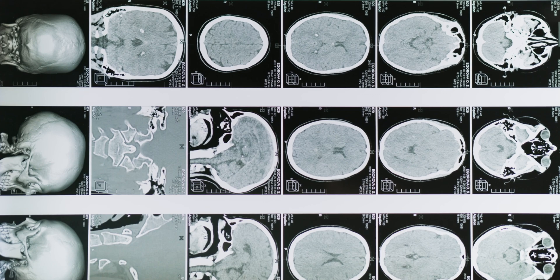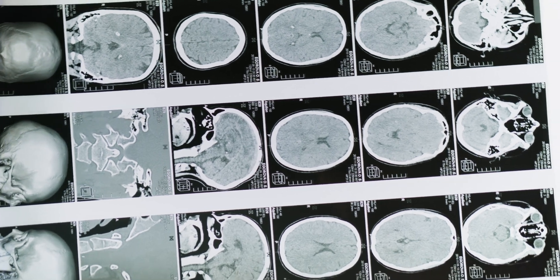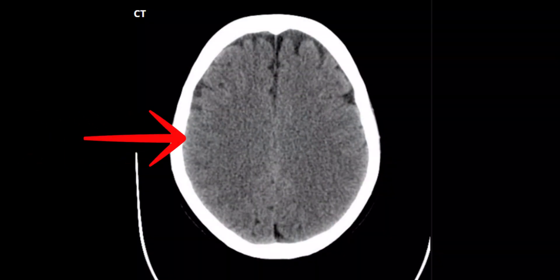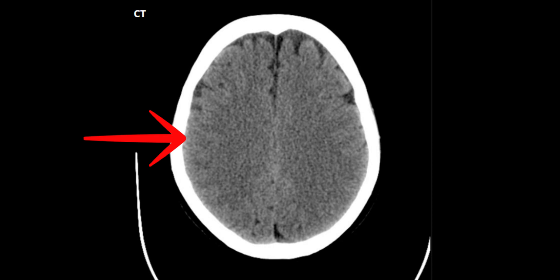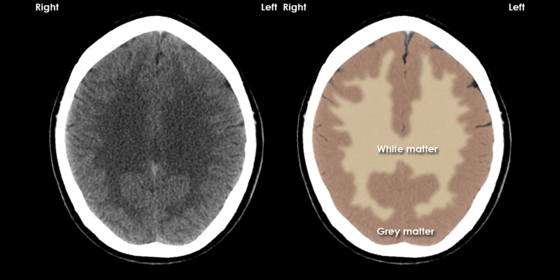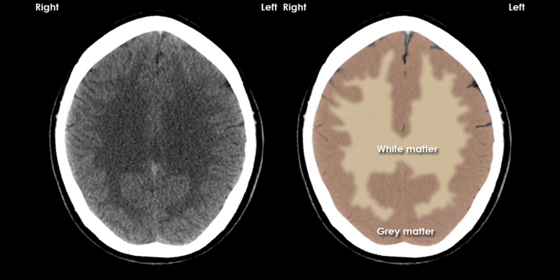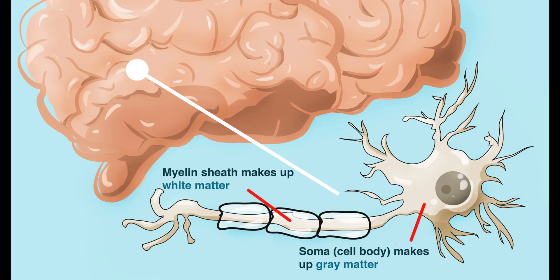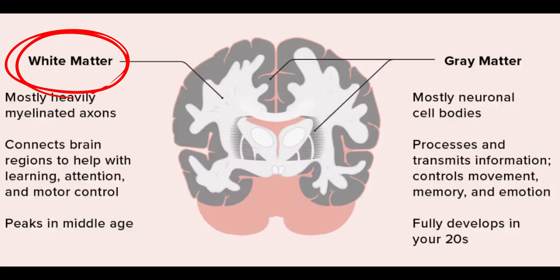Now let's visualize it on a CT scan. This here, the part of the brain lying in the periphery is the grey matter, and this part in the center appearing a bit dark is the white matter. Here is a simplified diagram. Now that we have discussed and understood the fact that white matter is composed of axons and lies centrally in brain parenchyma.